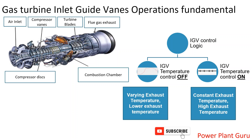The IGV follows a very complex logic here. In simple terms, it maximizes exhaust temperature — but more precisely, it monitors the isothermal firing temperature. It maintains the maximum firing temperature as constant, and accordingly you get the highest possible temperature in the exhaust gases.